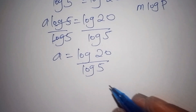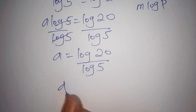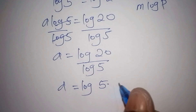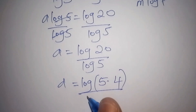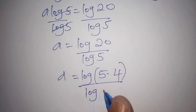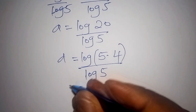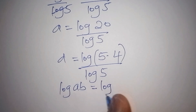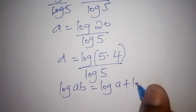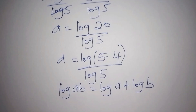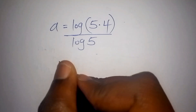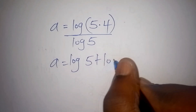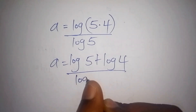Now we factorize log of 20 over log of 5. The log of 20 can be written as log of (5 multiplied by 4), all over log of 5. Since log(A×B) = log A + log B, we now have log 5 plus log 4, all over log 5.